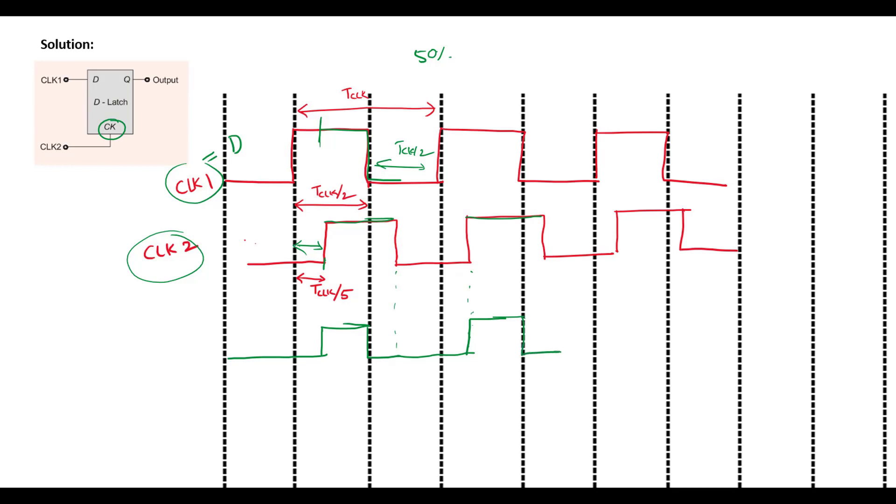And it will follow in similar fashion. That means we know that this is T clock, and we know that this is T clock by 2, and this on time period is simply T clock by 2 minus T clock by 5.